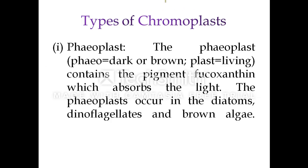Types of chromoplasts: Phaeoplast — 'phaeo' means dark brown. Phaeoplast contains the pigment fucoxanthin, which absorbs light. Phaeoplasts occur in diatoms, dinoflagellates, and brown algae.